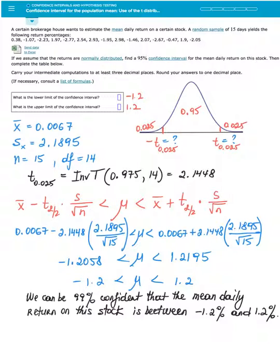That is enough information for me to compute this interval. My point estimate x-bar is 0.0067 subtract critical value 2.1448 multiplied into sample standard deviation 2.1895 divided by square root of sample size 15. On the other side, use the same numbers except add this margin of error. And once you compute these using calculator, you will get mu anywhere between -1.2058 and 1.2195. I round it to four decimal places to begin with, but your final answer should be rounded to one decimal place. So I trim it a bit more and it gives me -1.2 and 1.2. Mu is anywhere between these two values. Therefore, we can be 95% confident that the mean daily return on this stock is between -1.2% and 1.2%.